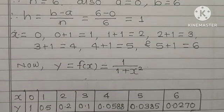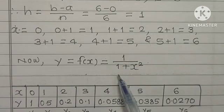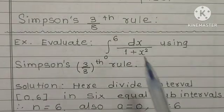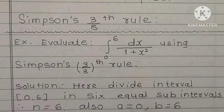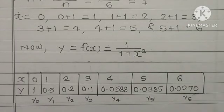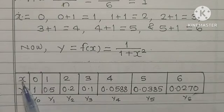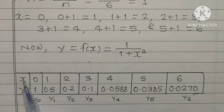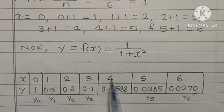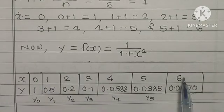Now Y is equal to f(x) and this is given: 1 upon 1 plus x square. That means 1 upon 1 plus x square is the function. Now from this, we have prepared this table. Value of X we have already obtained: 0, 1, 2, 3, 4, 5 and 6. These are the 7 values.